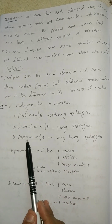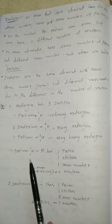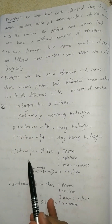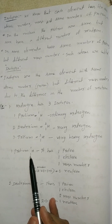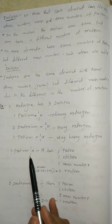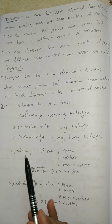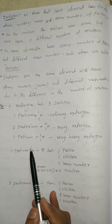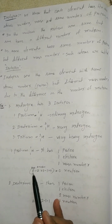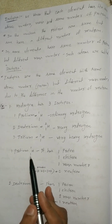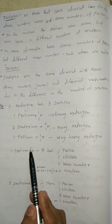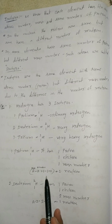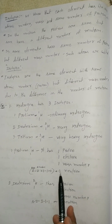These three are isotopes of hydrogen. First one, protium 1H1. It has atomic number 1, one proton, one electron. The top side number is mass number. So what is the neutron number? A minus Z — mass number minus atomic number — so 1 minus 1 equals 0. Neutrons are 0.